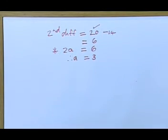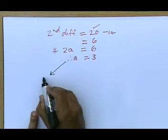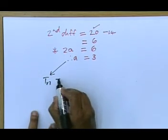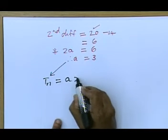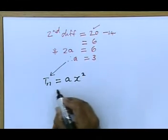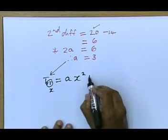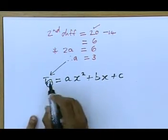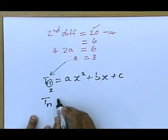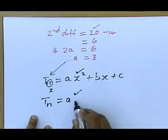What does a represent? a in this case is the value in the general term. In a quadratic equation, we write it in that form because we're working with the nth term, we're going to replace x with n.